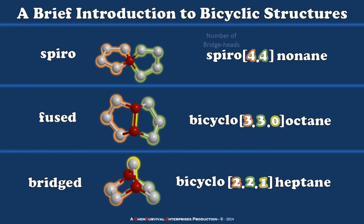So you can see now how this naming system works. The first element of the name tells us the number of bridgeheads. The second element of the name tells us the size of each of those bridges connected by the bridgeheads. And finally, the last tells us the total number of atoms within that particular system.